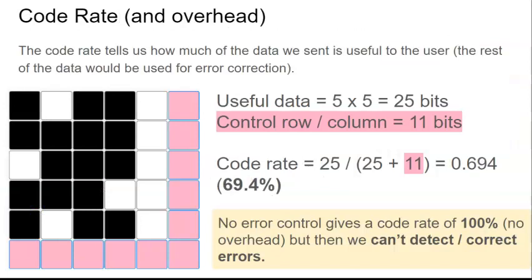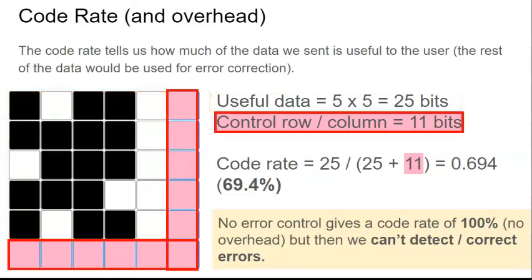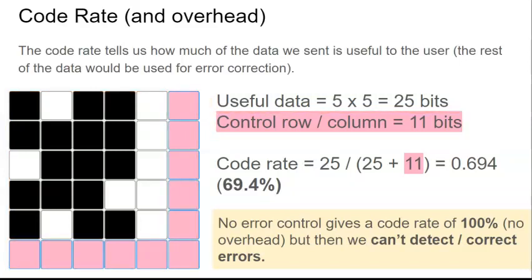The additional bits that are added to allow errors to be corrected are not directly useful to the user. The code rate tells us how much useful data has been sent. For example, if we have a 5x5 parity grid, 25 bits of the data are useful and a further 11 bits are used for error correction. This gives us a code rate of 25 over 36, or 69.4%. Note that in our parity example, we can only correct one error.